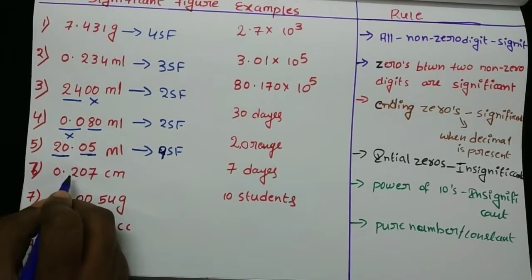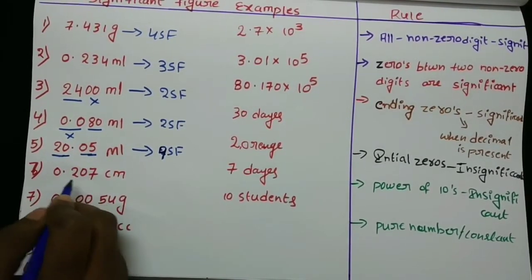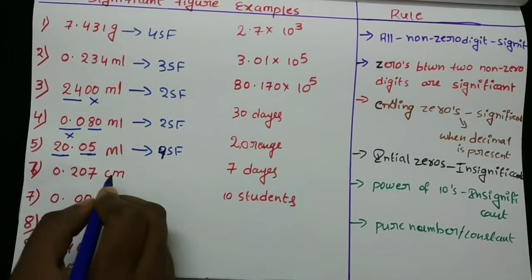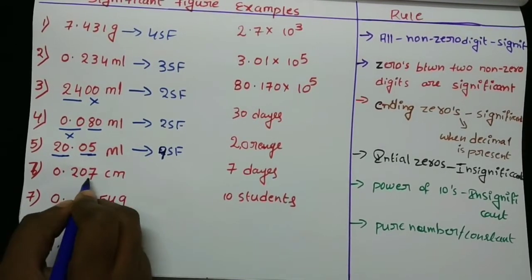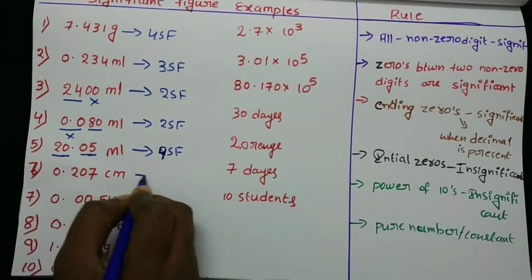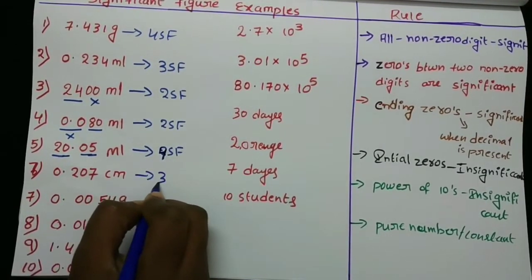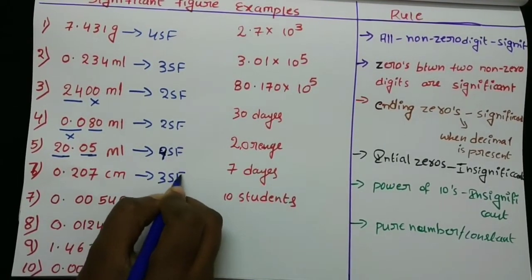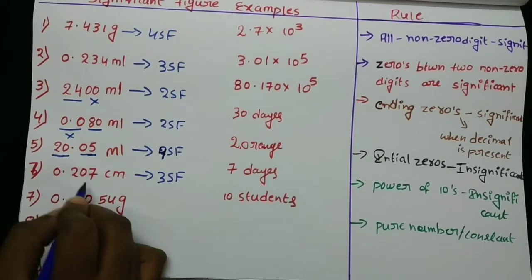0.207 — the initial zeros are insignificant, so 207 gives three significant figures. There are three significant figures here.